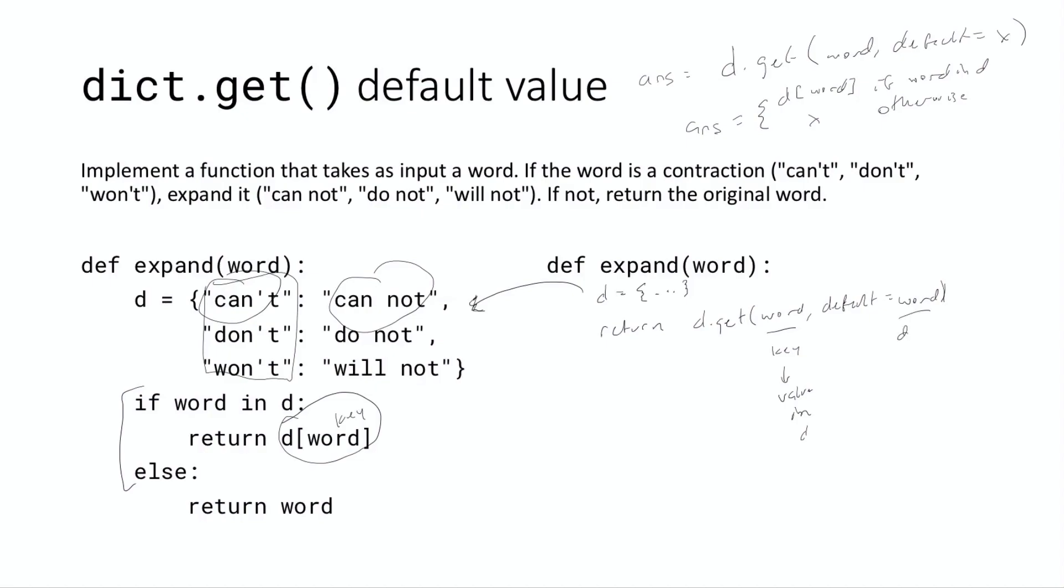But here, word is functioning as the default value. And so we're saying if the word is not a contraction, if it's not in the dictionary, we just want to return the original word untouched. And that's exactly what it will do. The default value is the original word.